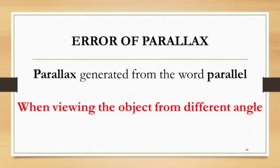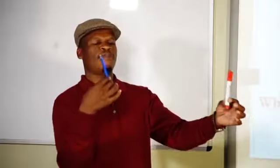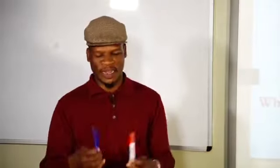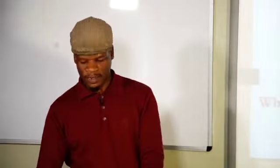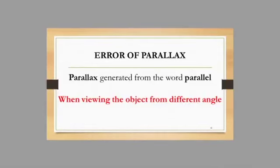An error of parallax occurs when you are viewing two objects that are parallel to each other but from a different angle. For example, if you are viewing a staff reading and a dumpy level from a different angle, this will produce an error of parallax.